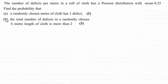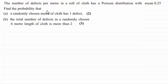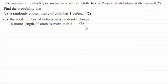Hi there. For this question we're told that the number of defects per meter in a roll of cloth has a Poisson distribution with a mean of 0.25. We're asked to find the probability that in part A a randomly chosen meter of cloth has one defect, for two marks, and in part B the total number of defects in a randomly chosen six-meter length of cloth is more than two, for three marks.